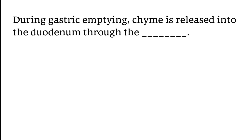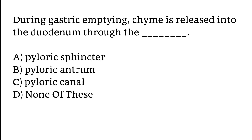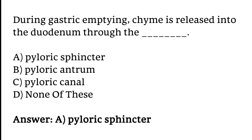During gastric emptying, chyme is released into the duodenum through the: A) pyloric sphincter, B) pyloric antrum, C) pyloric canal, D) none of these. The correct answer is option A. During gastric emptying, chyme is released into the duodenum through the pyloric sphincter.